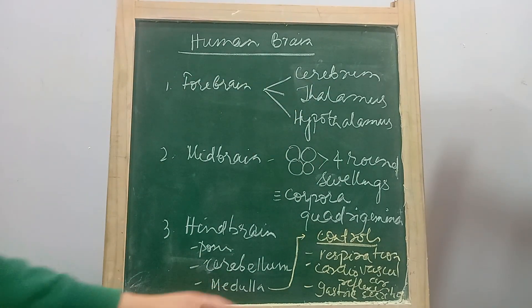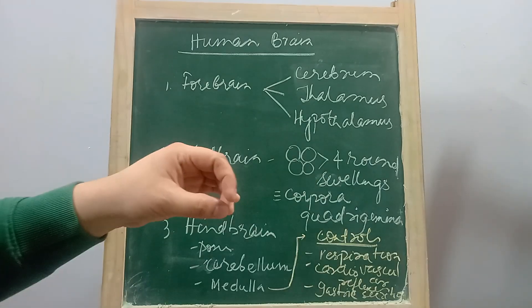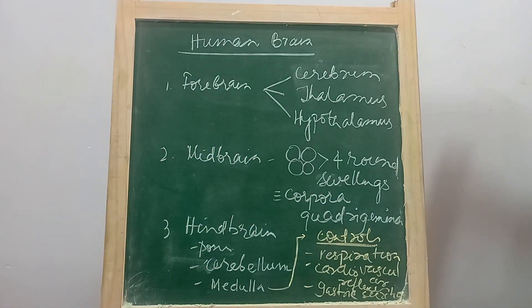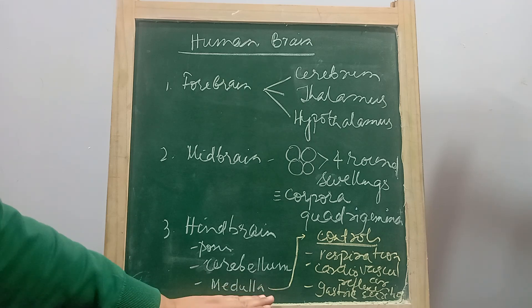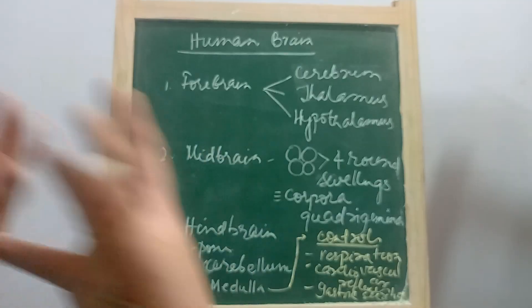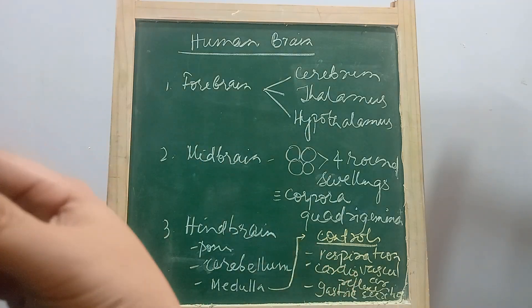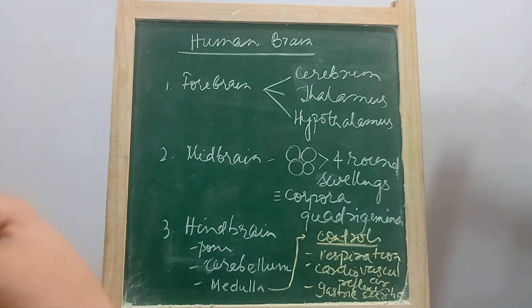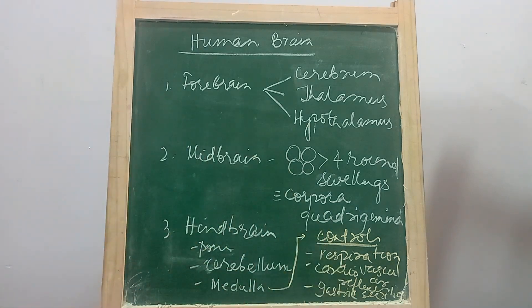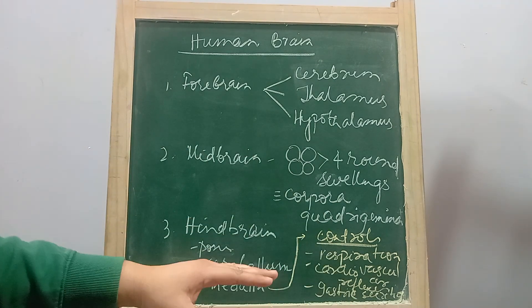Medulla oblongata is a part of the hindbrain which connects to the spinal cord. Medulla controls respiration, the breathing, cardiovascular reflexes, and gastric secretion.